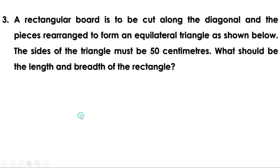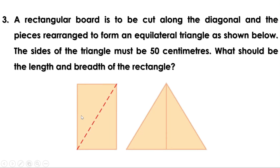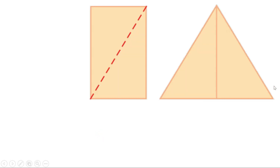A rectangular board is to be cut along the diagonal and the pieces are rearranged to form an equilateral triangle as shown. The sides of the triangle must be 50 centimeters. What should be the length and breadth of the rectangle? This rectangular board is cut through the diagonal: one triangle is placed here and the other triangle is placed like this, forming an equilateral triangle. Given that all the sides of the equilateral triangle are 50 centimeters.